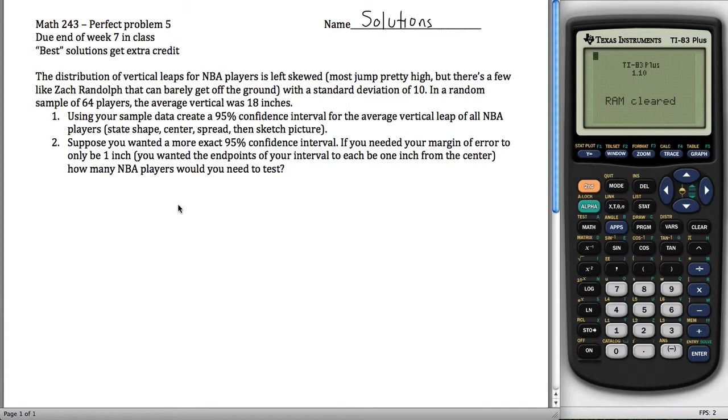Solution for Perfect Problem 5 for Math 243. We're asked to create a confidence interval, specifically a 95% confidence interval for the average vertical of all NBA players.